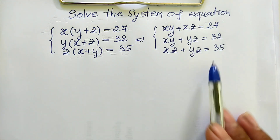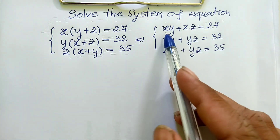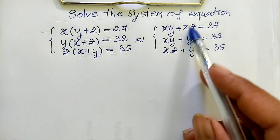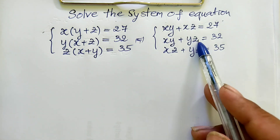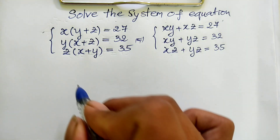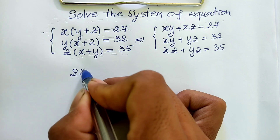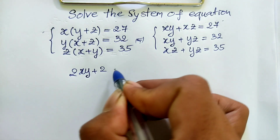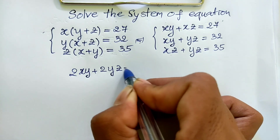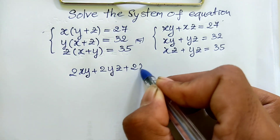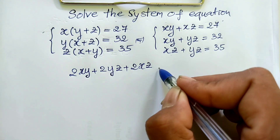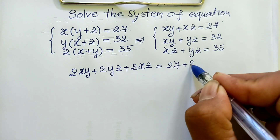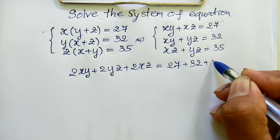Now I sum all three equations. We have hy from the first, hy from the second, then hz and hz, and yz and yz. So we get 2hy plus 2yz plus 2hz equals 27 plus 32 plus 35.